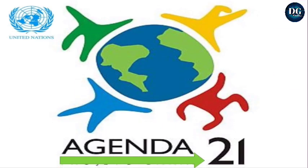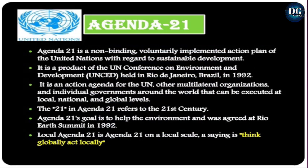The third topic is Agenda 21. Agenda 21 is a non-binding, voluntarily implemented action plan of the United Nations with regard to sustainable development. It is a product of the UN Conference on Environment and Development held in Rio de Janeiro, Brazil, in 1992. It is an action agenda for the UN, other multilateral organizations, and individual governments across the world, executable at local, national, and global levels. The '21' in Agenda 21 refers to the 21st century.